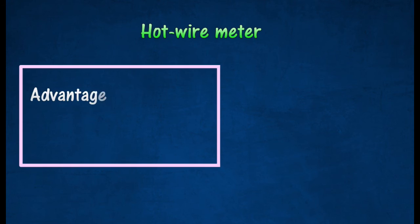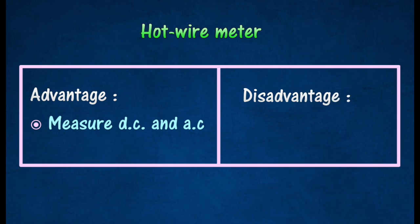The advantage of a hot wire meter is that it can measure direct current and alternating current, as both currents produce the same heating effect. The disadvantage of a hot wire meter is that its scale is not linear.